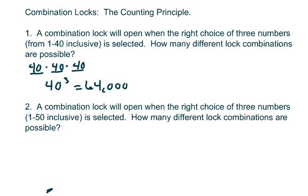Let's say that they couldn't be repeated. Then you would do 40 times 39 times 38, and that would give you 59,280 ways.